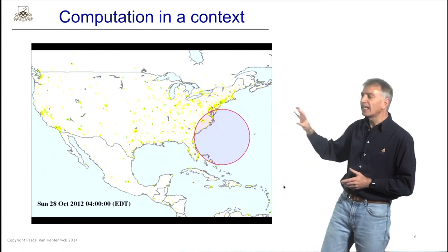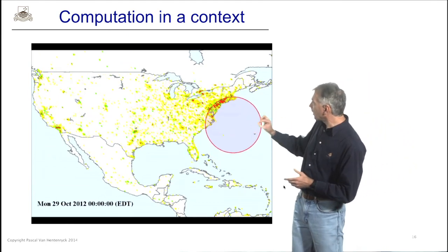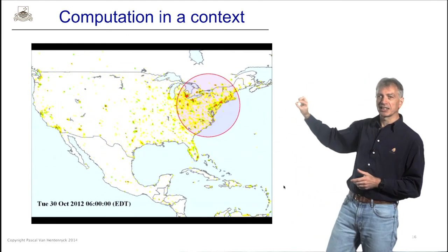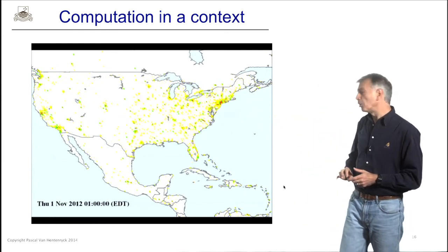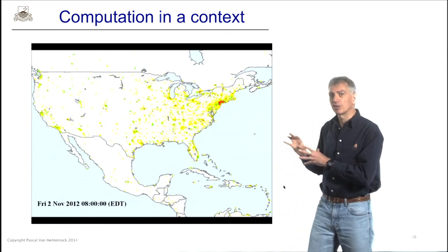We're going to go over computational social science. And we will build artifacts like this one. This is a sentiment analysis, capturing the sentiment of everyone in the United States during Hurricane Sandy. And red is bad, yellow is good. So you'll build something like this as part of the class.